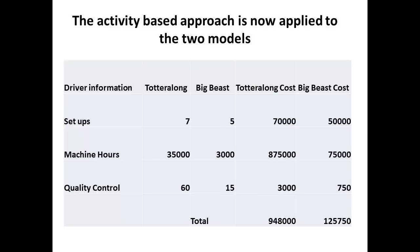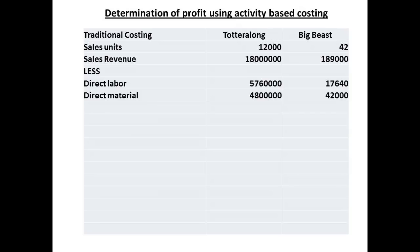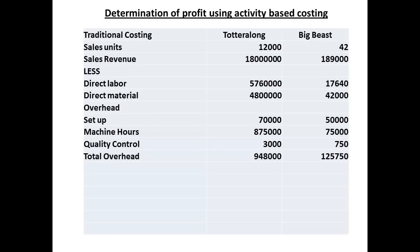How are these going to impact on profit? The sales units and sales revenue will remain the same as before. We are using figures of 12,000 units for sales of the moped and 42 units for sales of the luxury bike. The figures for direct labour and direct materials also remain unaltered. We now enter the overhead using the activity-based costing approach, with a total overhead allocation of $948,000 for the moped and $125,750 for the luxury bike. The total cost of sales for each model can now be determined.